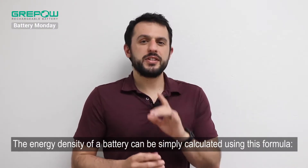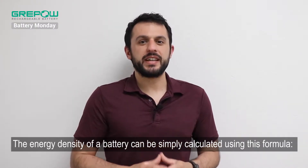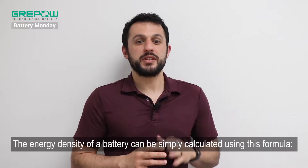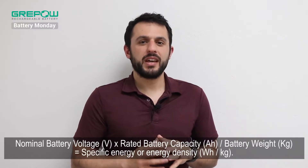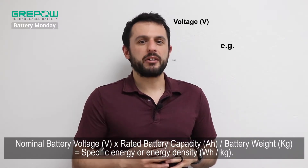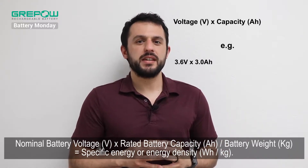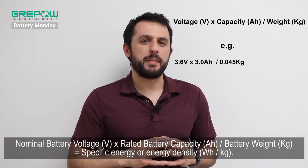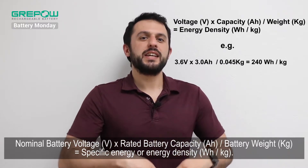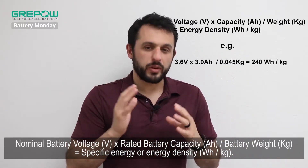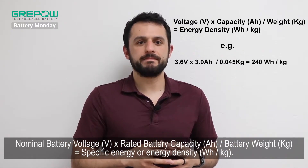The energy density of a battery can be simply calculated using this formula: nominal battery voltage times rated battery capacity, divided by battery weight, equals specific energy or energy density.